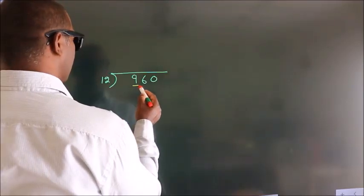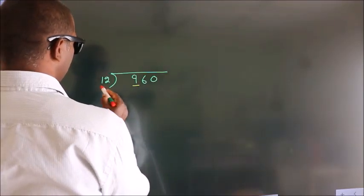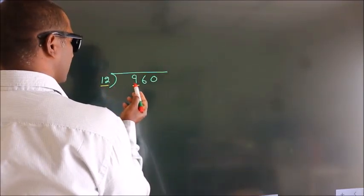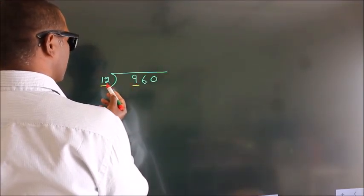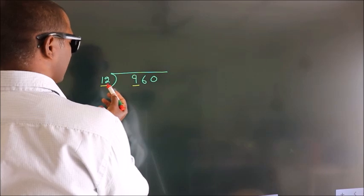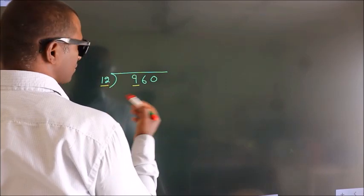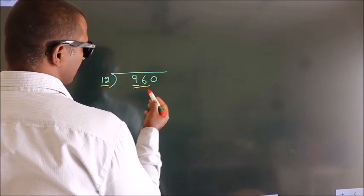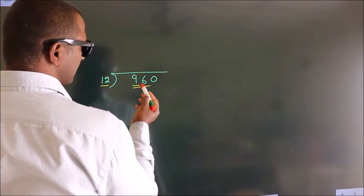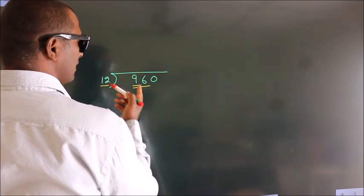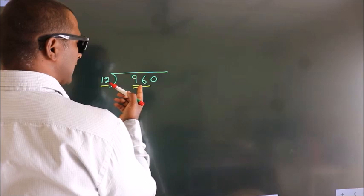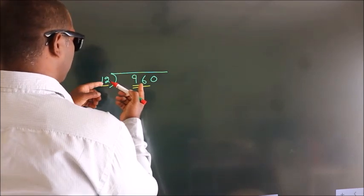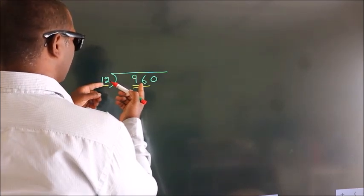Here we have 9, here 12. 9 is smaller than 12. So we should take two numbers: 96. When do we get 96? In the 12 table.